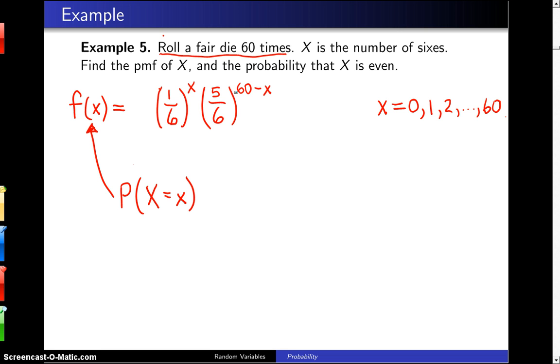So we need to add a coefficient out front to account for the different orderings, and that will be a combination. The combination will be 60 choose X, and that is the number of ways that we can place our X sixes amongst the 60 positions. And that right there is the probability mass function of X.